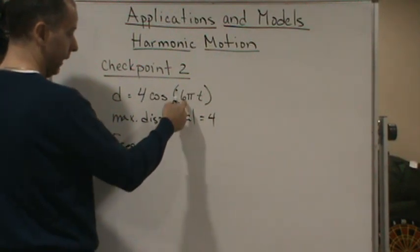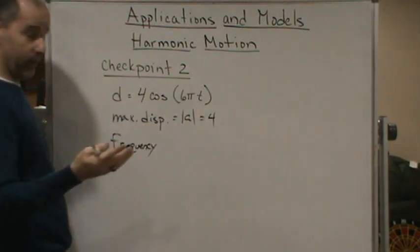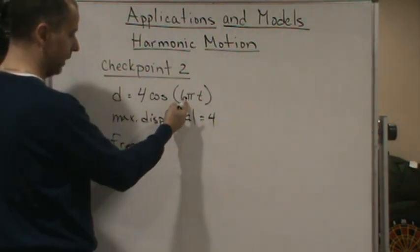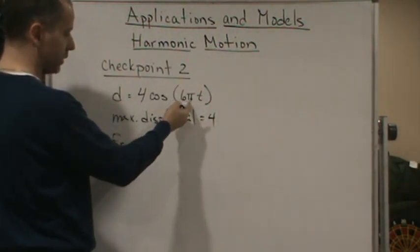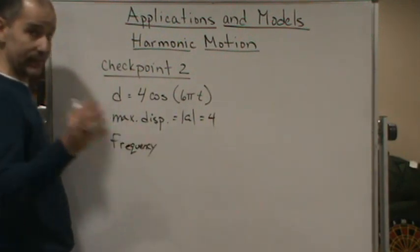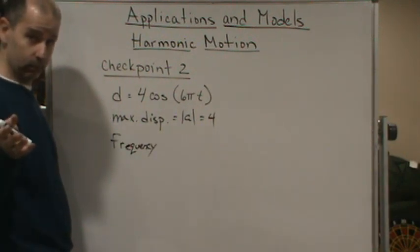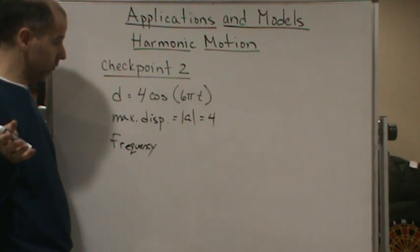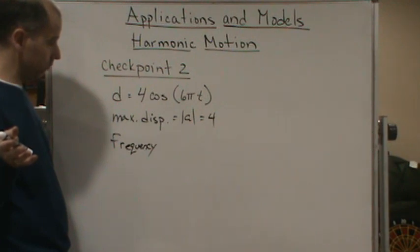So if you know the period, remember the period is 2 pi over omega. Here's omega. So 2 pi over 6 pi gives you 1 third, right? And so we know that the frequency is then 3.